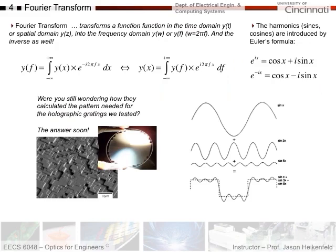So what's the Fourier transform? It transforms a function in the time domain or the spatial domain — meaning a function of time, or space, or distance — into the frequency domain, which could be frequency or omega (2π f). You can go back and forth between the frequency domain and the spatial domain as a function of distance.